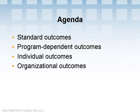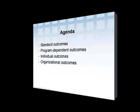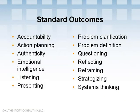It always helps to look at the types of outcomes that programs aim for when designed primarily for accomplishing individual development. We'll also review various types of outcomes that organizations often use Action Learning to accomplish. An outcome is a change or benefit realized by a participant or organization from using the process. There are two types: standard outcomes you always get regardless of customization, and program-dependent outcomes that depend on the purpose and design of the process.